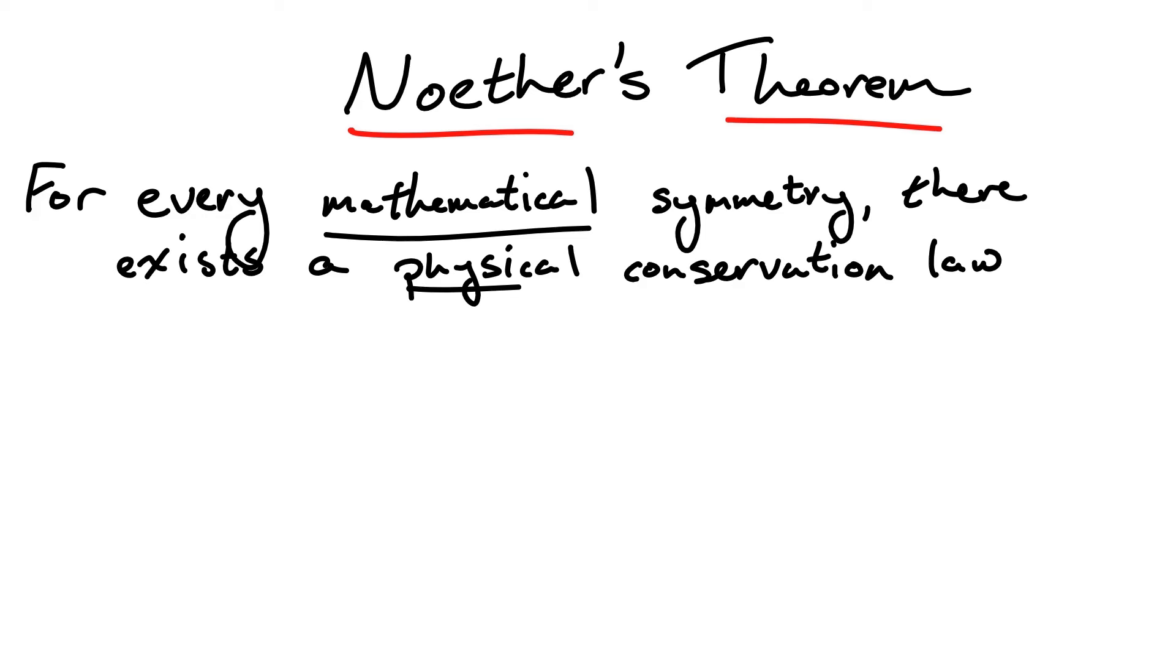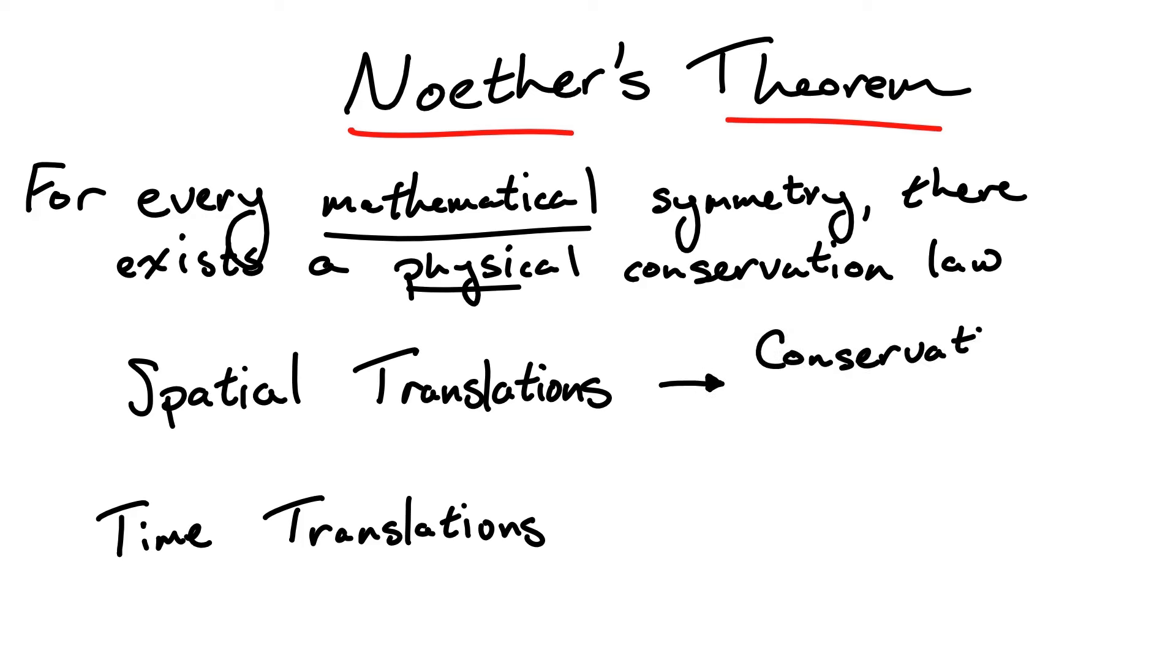this theorem tells us that for every mathematical symmetry of our theory, there is a corresponding physical conserved quantity. The two most important for this discussion are symmetries under moving in any direction in space, also known as spatial translations, or by shifting forward and backwards in time, or time translations. If we use Noether's theorem, we find that the conserved quantities corresponding to spatial and time translations are linear momentum and energy, respectively.